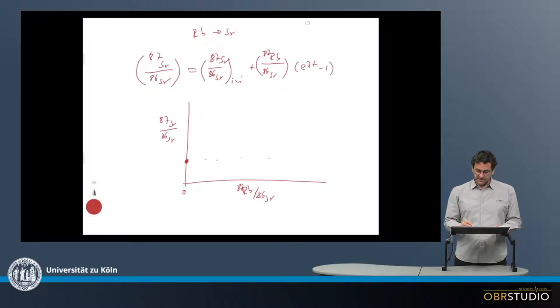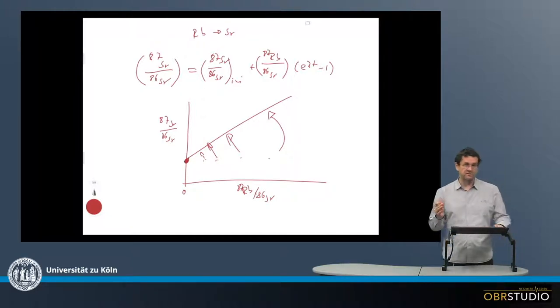But all the other rocks that might have rubidium-strontium ratio something like this plot here, and they decay then with time, and thereby form the isochron, which is rotated in this direction. And the rotation point is here, so this is really the initial value, and this is what we need to anchor the isochron.